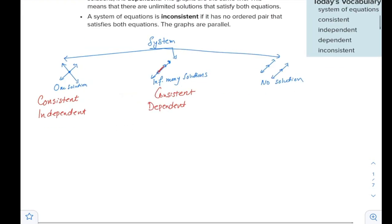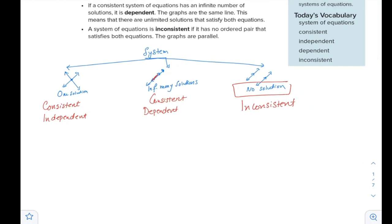While in the case of no solution, the system is inconsistent, and we are not going to classify more than that. You are not saying dependent or independent because there is no consistency.